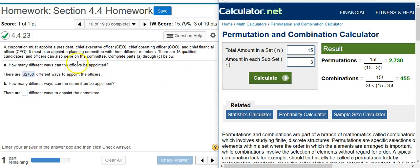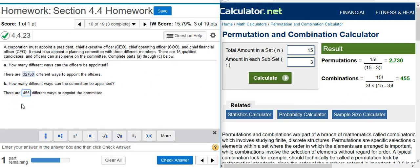And here, the order doesn't matter, because we're just choosing people for a committee. And once you're on the committee, you're on the committee. There's no indication that there's any order here with the committee. So therefore, that means we want to calculate a combination, which in this case, you see here is 455.